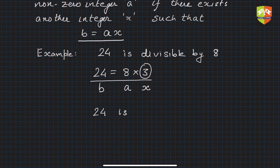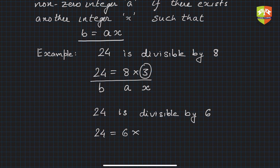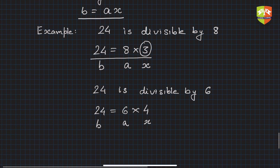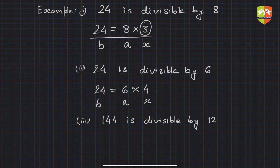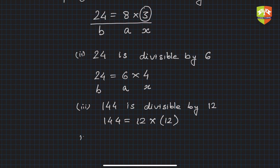24 is also divisible by 6 because 6 times 4 is 24, so here x is 4. Another example: 144 is divisible by 12 because 12 times 12 is 144, so x is 12 itself.